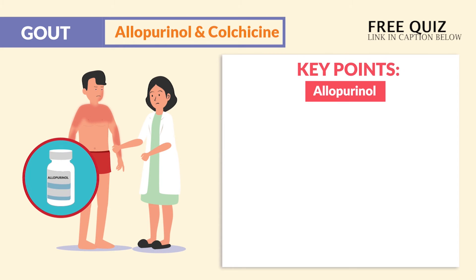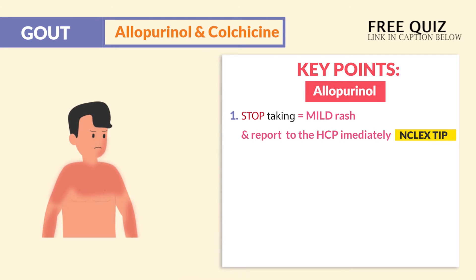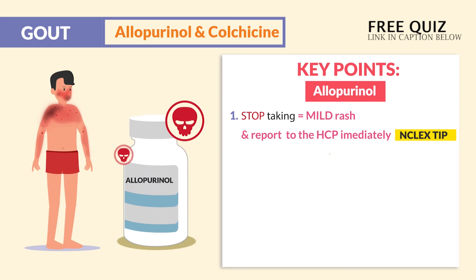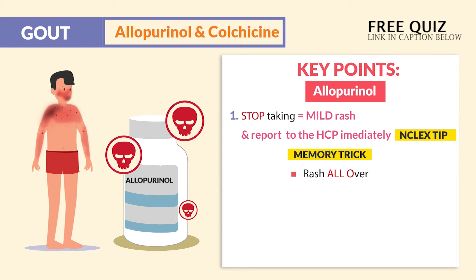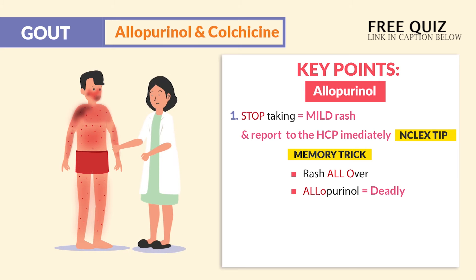Now, the big key points for allopurinol: we stop taking if we see a mild rash, and we report to the HCP immediately. That's the biggest NCLEX tip there. It could mean deadly Stevens-Johnson syndrome or even toxic epidermal necrolysis — fancy words for a really bad skin rash. The memory trick we use is 'rash all over for allopurinol is very deadly.' So even a mild rash, we stop taking and we report to the provider.